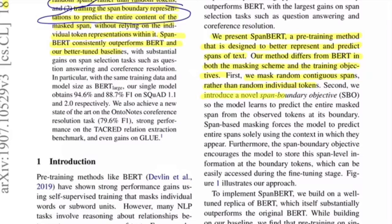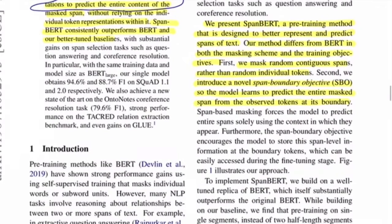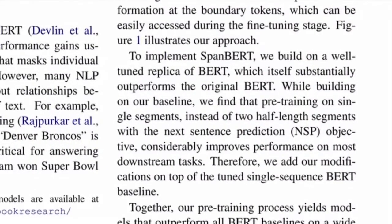The first difference is they mask random contiguous spans rather than individual tokens. The second is they introduce a novel span boundary objective, so the model learns to predict the entire masked span from observed tokens at its boundary. To implement SpanBERT, they build a well-tuned replica of BERT which substantially outperforms the original BERT.